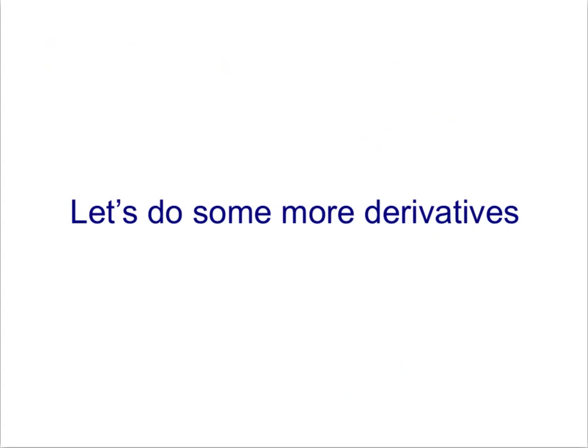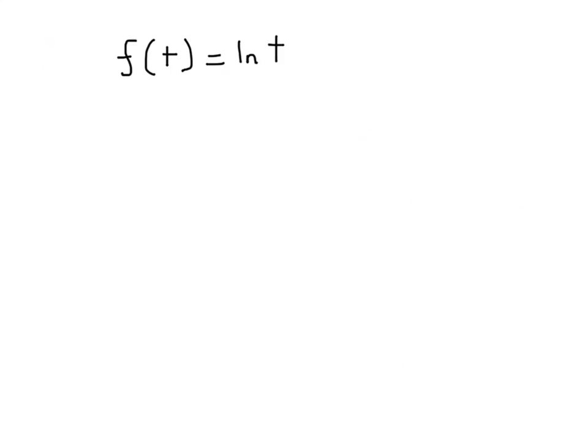Let's start by doing some derivatives. The first one is simply f of t equals the natural log of t. By our formula, the derivative of f of t, f prime of t, is just 1 over t. It's about that easy. So right now, we're smiling. Let's see if we can keep our smiles for the rest of the examples.